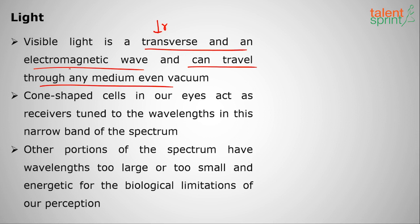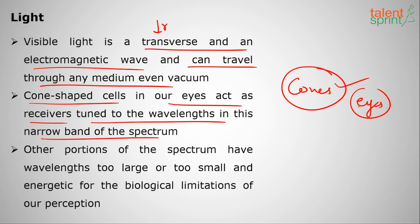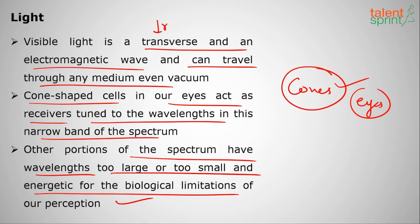As an electromagnetic wave, light doesn't require any medium — it can travel through solids, liquids, plasma, Bose-Einstein condensates, or even vacuum. Cone-shaped cells present in our eyes act as receivers tuned to wavelengths in this narrow visible band. Other portions of the spectrum have wavelengths too large or too small, which cannot be detected by our cones.